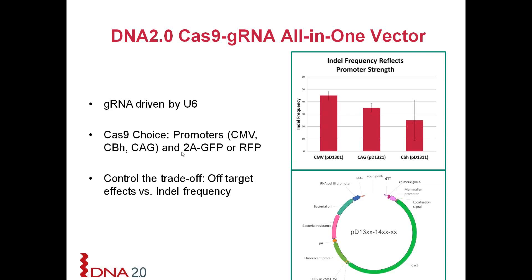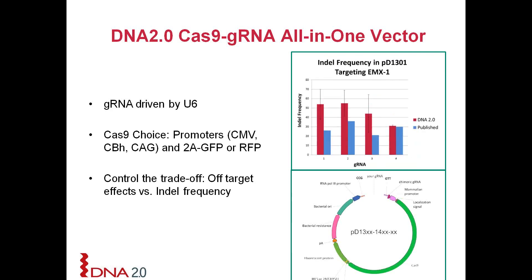Another convenient feature is fusions with the 2A splice site for fluorescent proteins. DNA 2.0 has developed some IP-free fluorescent proteins. We offer fusions with the green and the red, which are compatible with each other, so you can have two different plasmids in the same strain and monitor expression of Cas9 in that host. Here is another graph showing a comparison of indel frequencies using four different guide RNAs, demonstrating that our results with DNA 2.0's vector are comparable with published results in the literature. Our vectors have been comprehensively validated for their intended function.